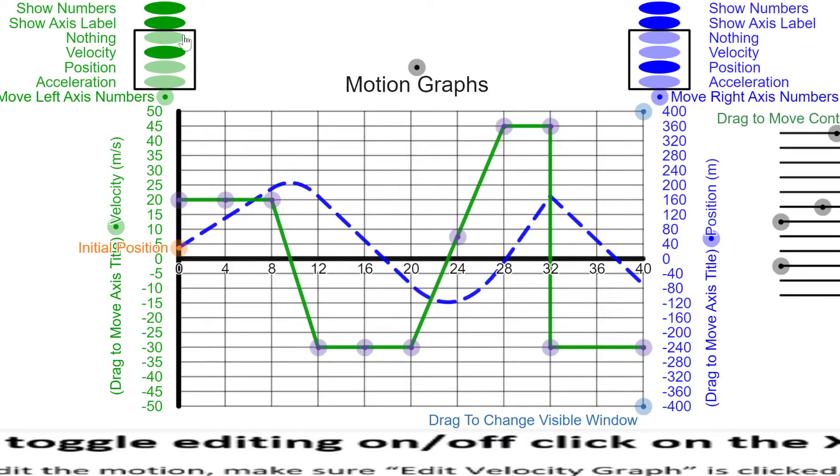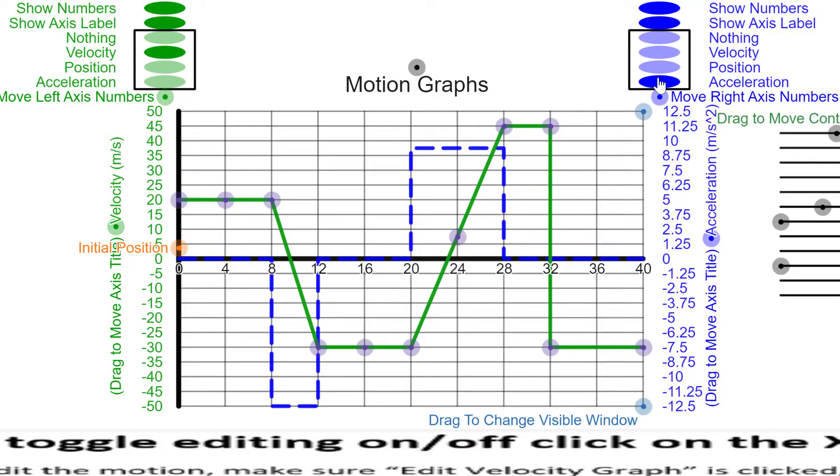But the green graph here is the velocity graph. What you do is you drag these handles and that will change the velocity time graph. You can choose between the other axis being position, velocity, or acceleration.